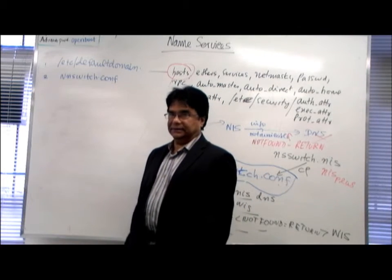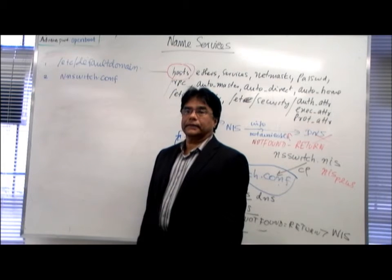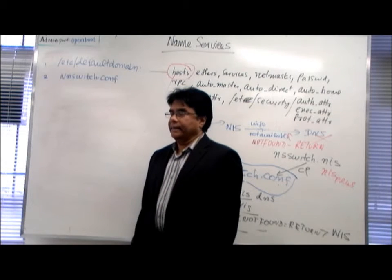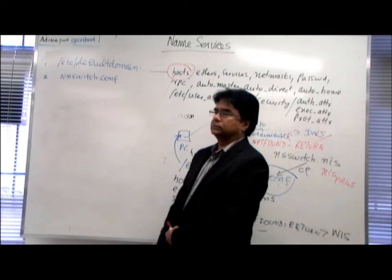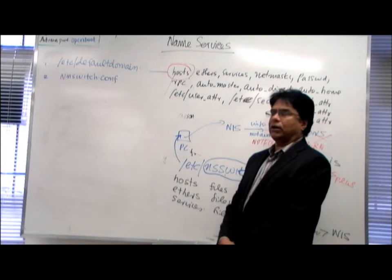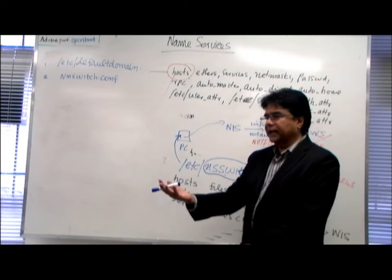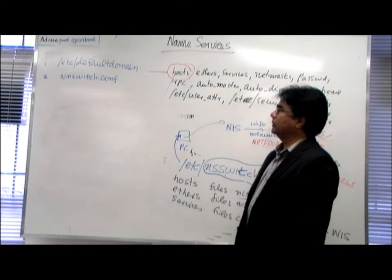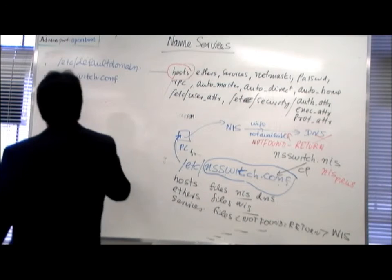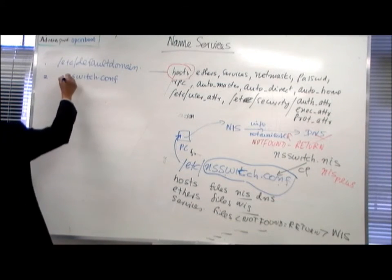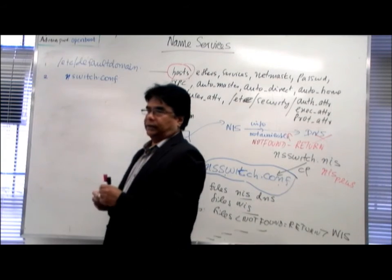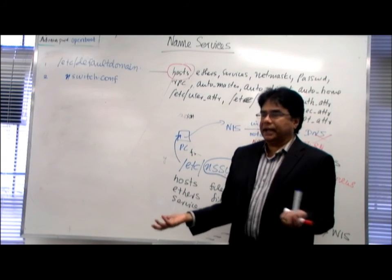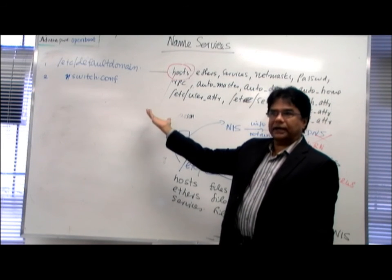ETC defaultdomain is another file separate from NSSwitch.conf. NSSwitch.conf gives us the direction of where to go for name service information — host-related information, ethers-related information, etc. If I want to configure DNS, I should have a domain name. If I want to configure NIS plus or NIS, I also need a domain name. Any name service we configure requires a domain name.